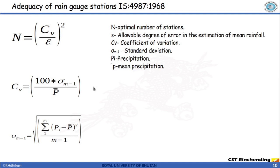How many stations are required in a catchment to estimate the mean precipitation? According to IS standard, the number of stations required in a catchment is given by an expression where Cv is the coefficient of variation and E is the allowable degree of error in estimation of mean precipitation. Cv is given by 100 times standard deviation divided by the mean precipitation. Note that this 100 comes from the allowable degree being expressed as a percentage divided by 100, so you may have to take that into consideration while solving a numerical.